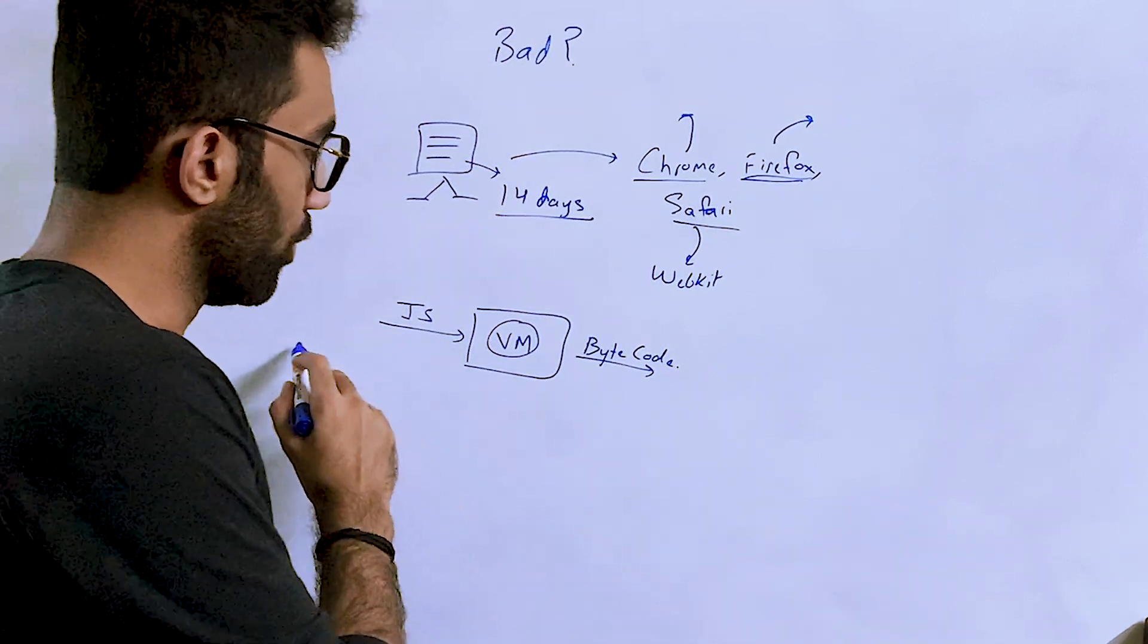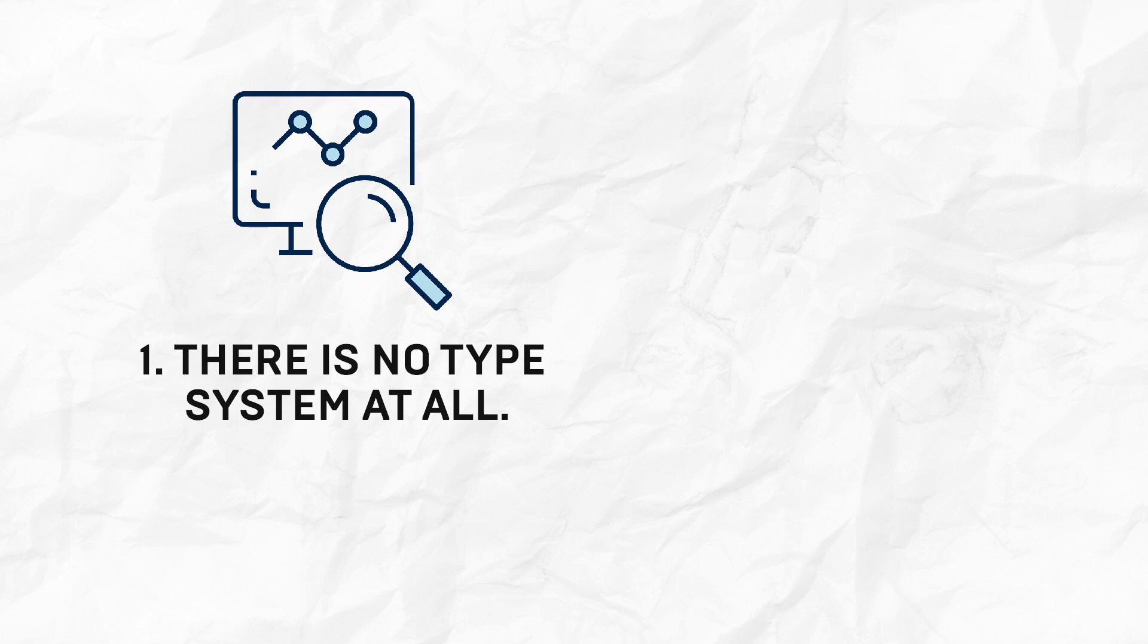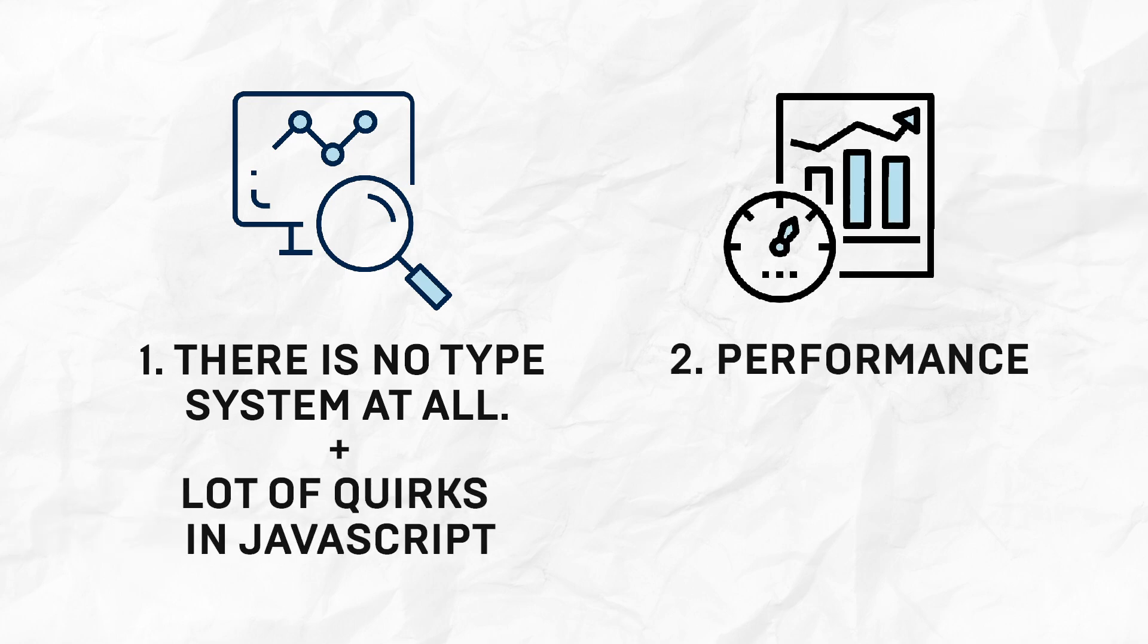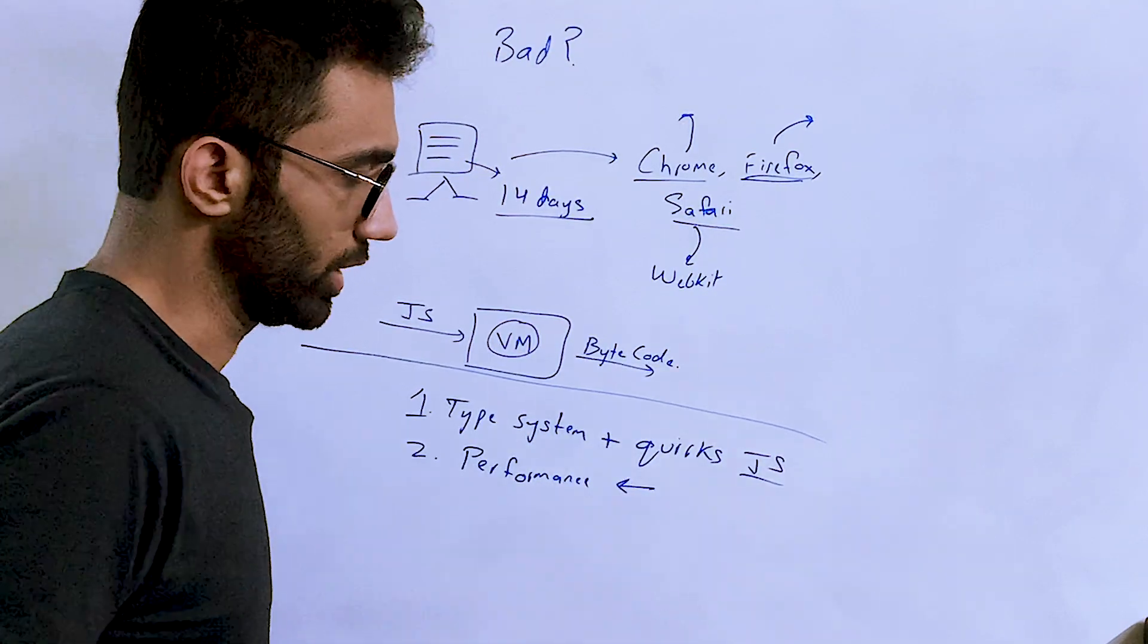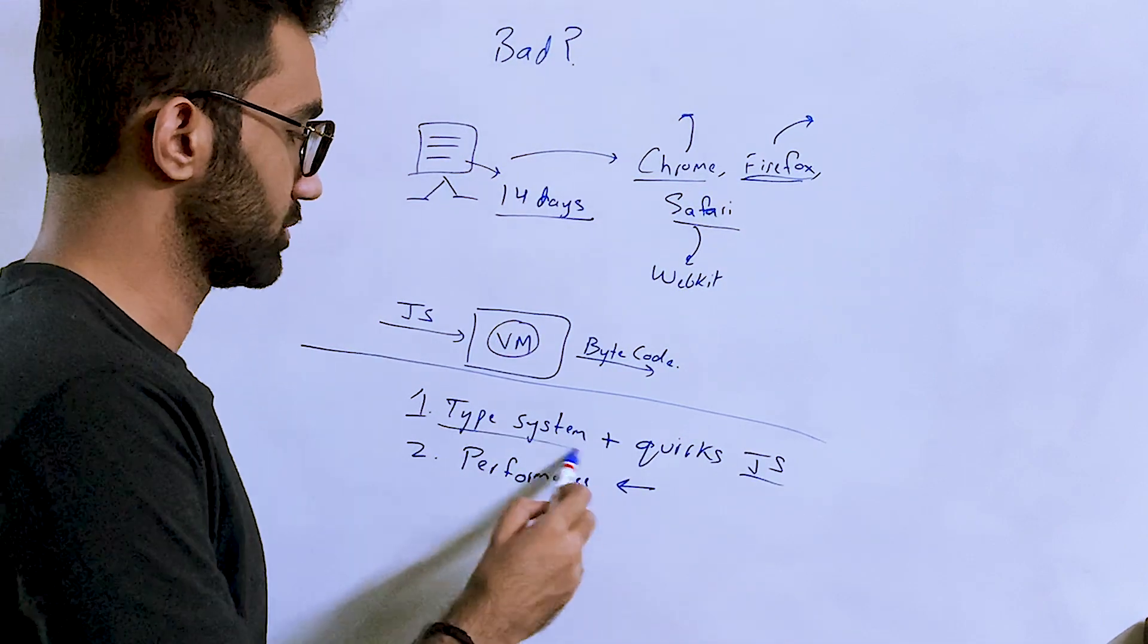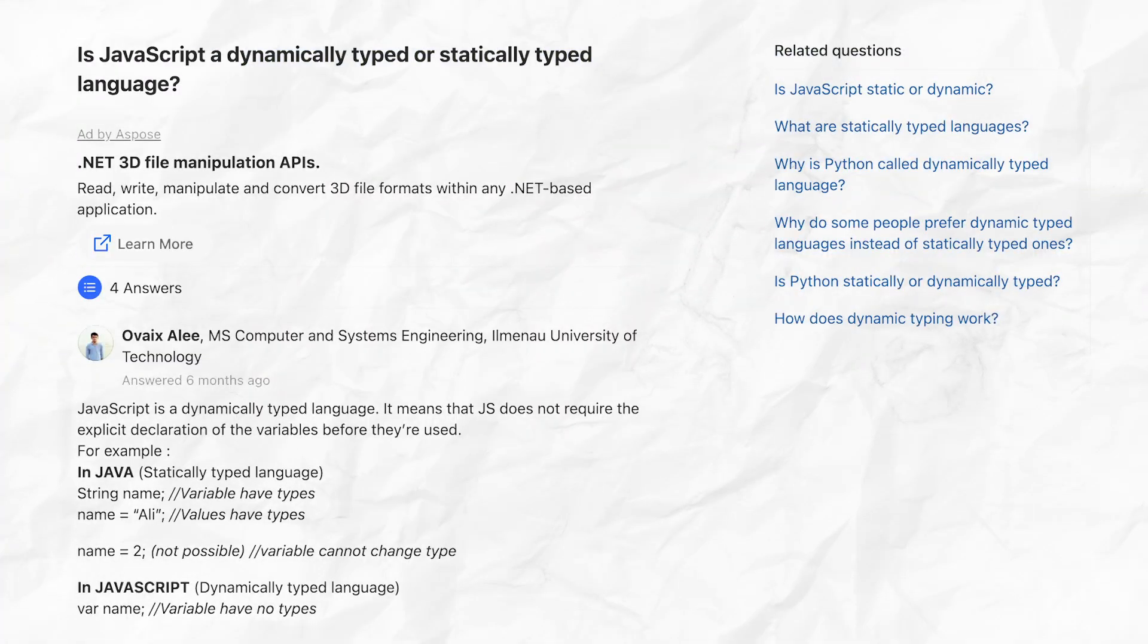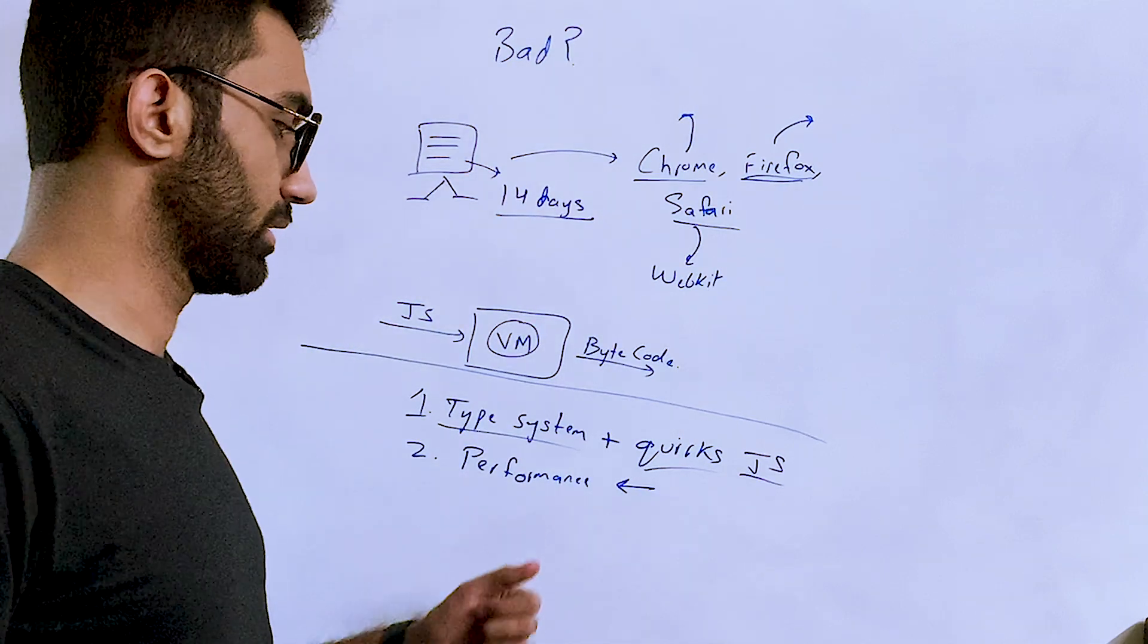When people say that JavaScript is a bad programming language, they mostly refer to just two things. The first thing is there is no type system at all, plus there are a lot of quirks in JavaScript language. And the second thing which people refer to is performance. More often than not, people don't really mind the second point that much as they mind the first one. Of course there is a reason for both of these points. The way JavaScript was formed, obviously it is not a statically typed language, it's a dynamically typed language. This was a decision that was taken long back ago.